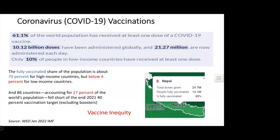In Nepal, almost 29 million doses have been given, with 13 million fully vaccinated, counting almost 45% of the population. Just recently, a press note announced this figure has increased to 60% in Nepal.